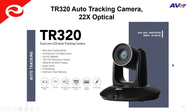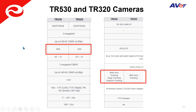The TR320 camera looks very similar to the TR530 but has a gray bezel and 22x optical zoom. This camera currently only offers one tracking mode: wide area tracking. The key differences between the TR530 and TR320 are the optical zoom — 30x versus 22x — and the tracking modes. The TR530 offers three tracking modes; the TR320 only has wide area. There are discussions about updating the firmware so that the TR320 also offers stage and segment tracking, which is a work in progress that could change in the near future.